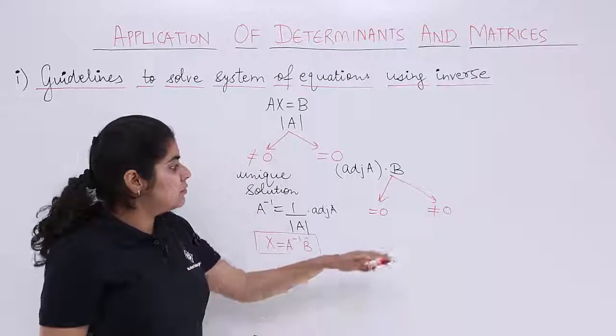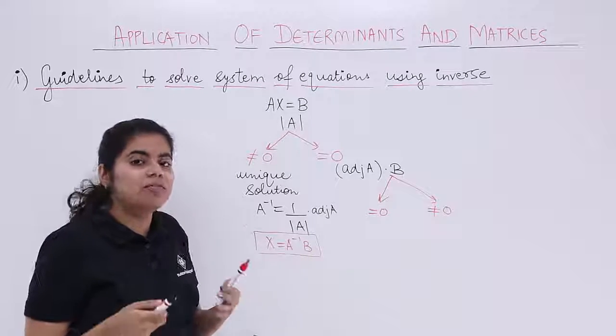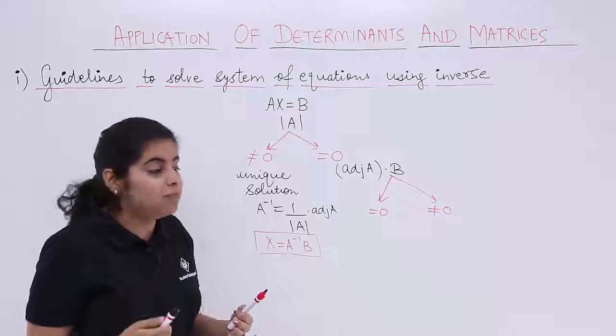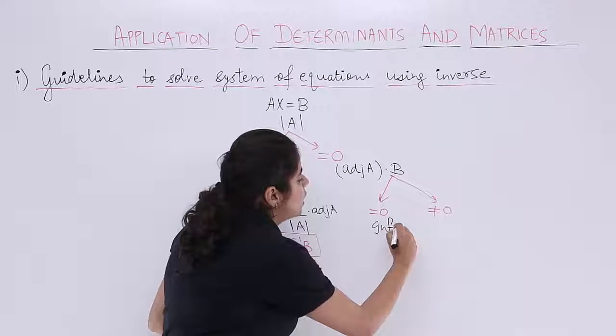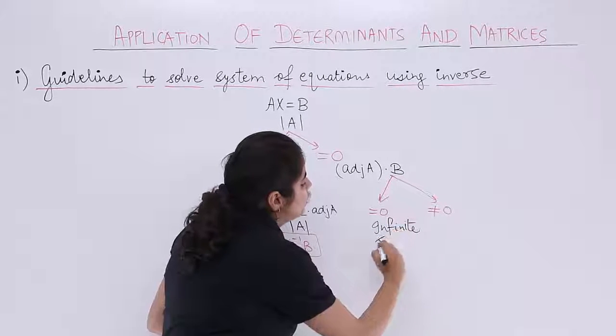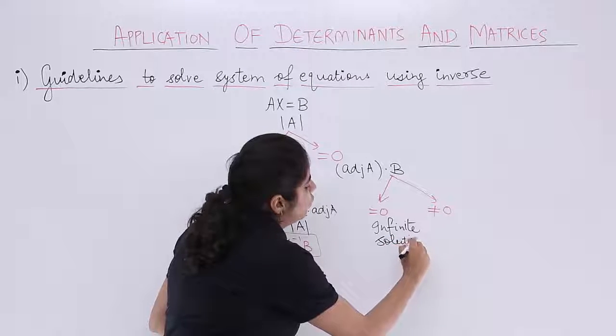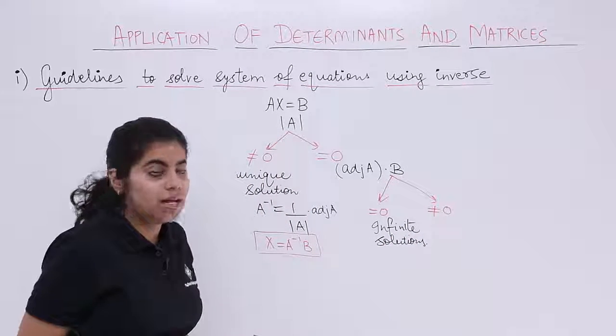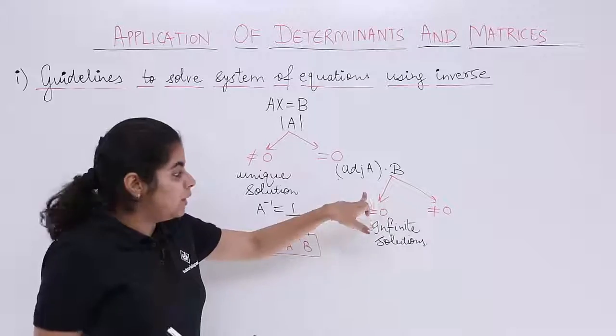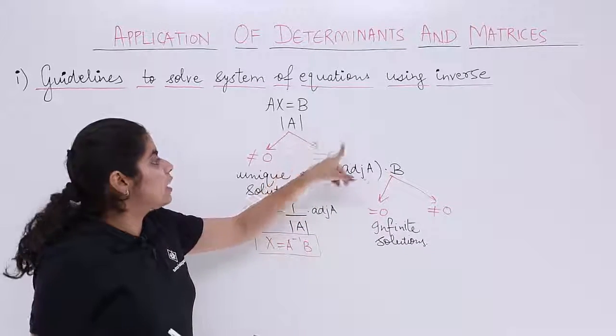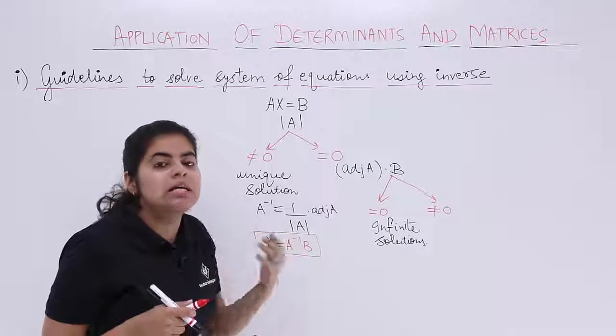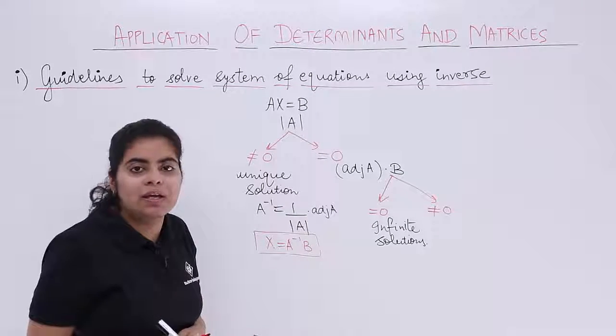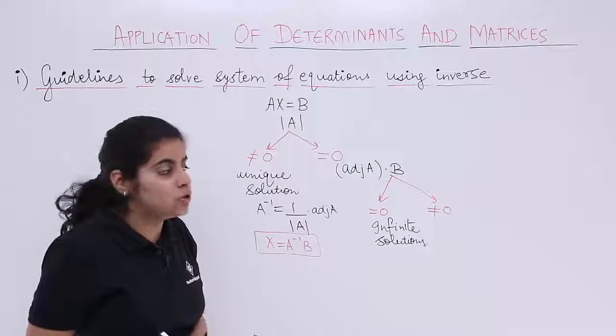Now if this value comes out to be 0, if adjoint A multiplied by B comes out to be 0, you have solution but not one. You have infinite solutions to the system of equations. If adjoint A into B comes out to be 0 and you discover already earlier that del A is also 0, determinant of A is also 0, both 0s means infinite solution.